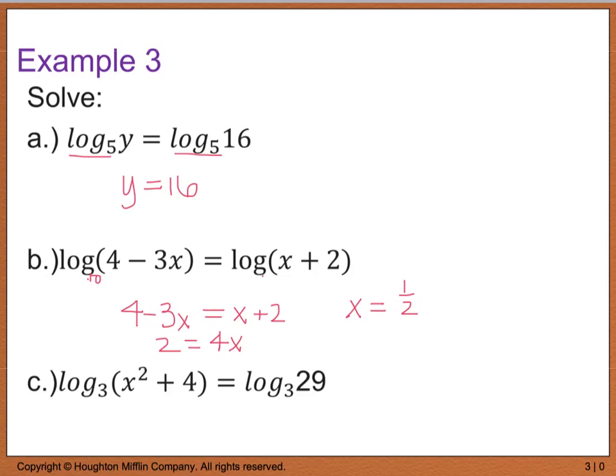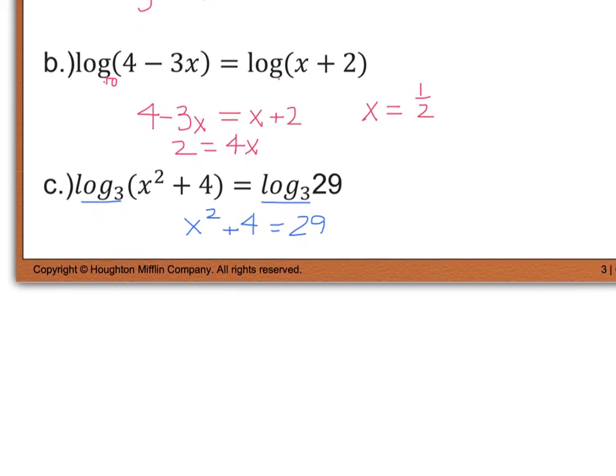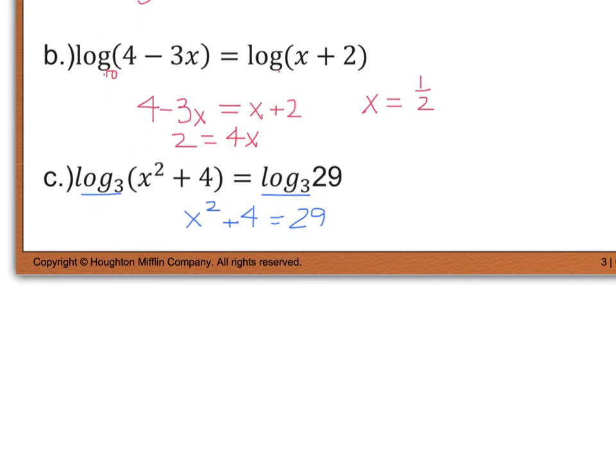And for part c, same thing, I have log base 3 and a log base 3 on both sides. So now I have an x squared plus 4 equals 29, because the rest of it has to be equal to one another since the bases are the same. And I'm going to solve for x. So now I have x squared equals 25, or x equals plus or minus 5.